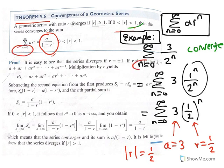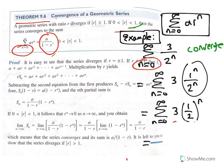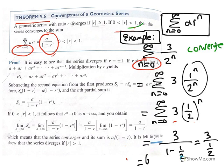Since the absolute value of the common ratio is 1 half, which is between 0 and 1, this geometric series converges. The theorem gives us the sum: a divided by 1 minus r. With a equal to 3 and r equal to 1 half, we get 3 divided by (1 minus 1 half), which is 3 divided by 1 half, giving a sum of 6. The infinite sum of this series is 6.